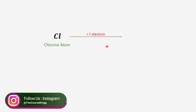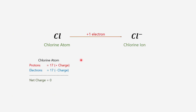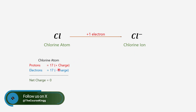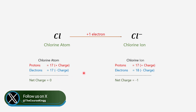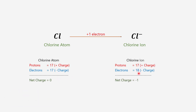Now we will discuss about chlorine. When a chlorine atom gains one electron, it becomes a chlorine ion. A chlorine atom contains 17 electrons and 17 protons, so the net charge on the chlorine atom is zero. On the other hand, a chlorine ion contains 17 protons and 18 electrons, so the net charge on the chlorine ion is minus one. So it is called a negative ion.